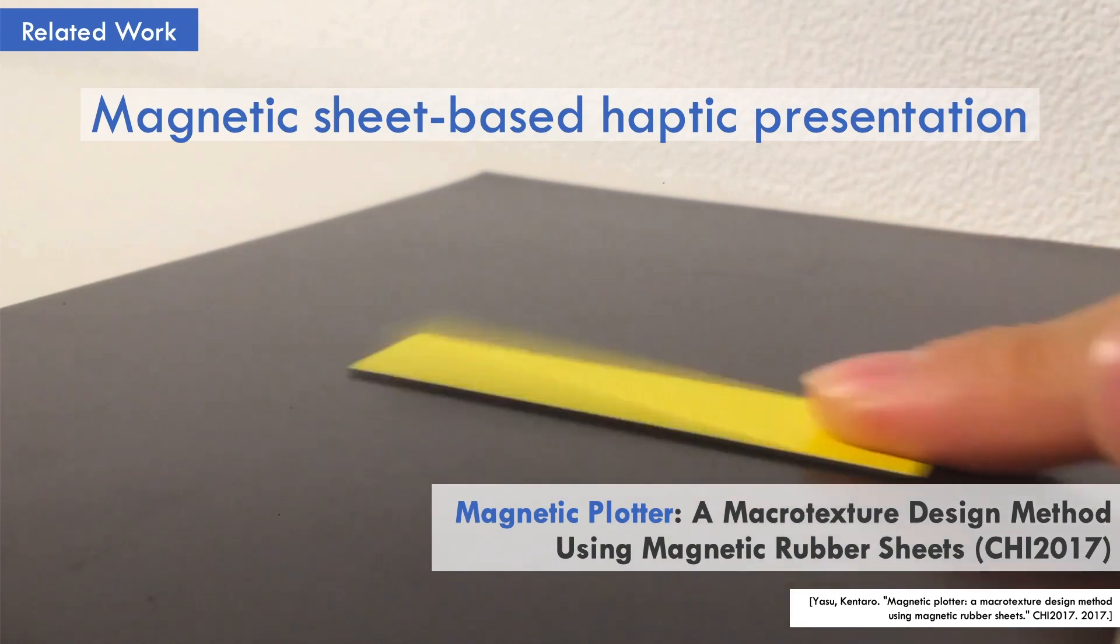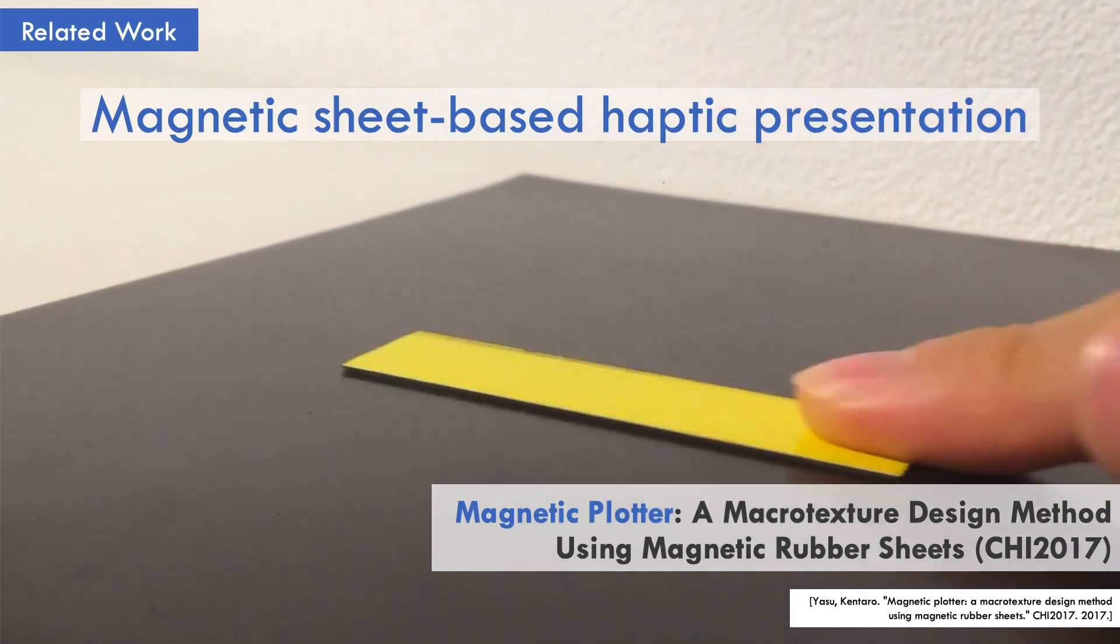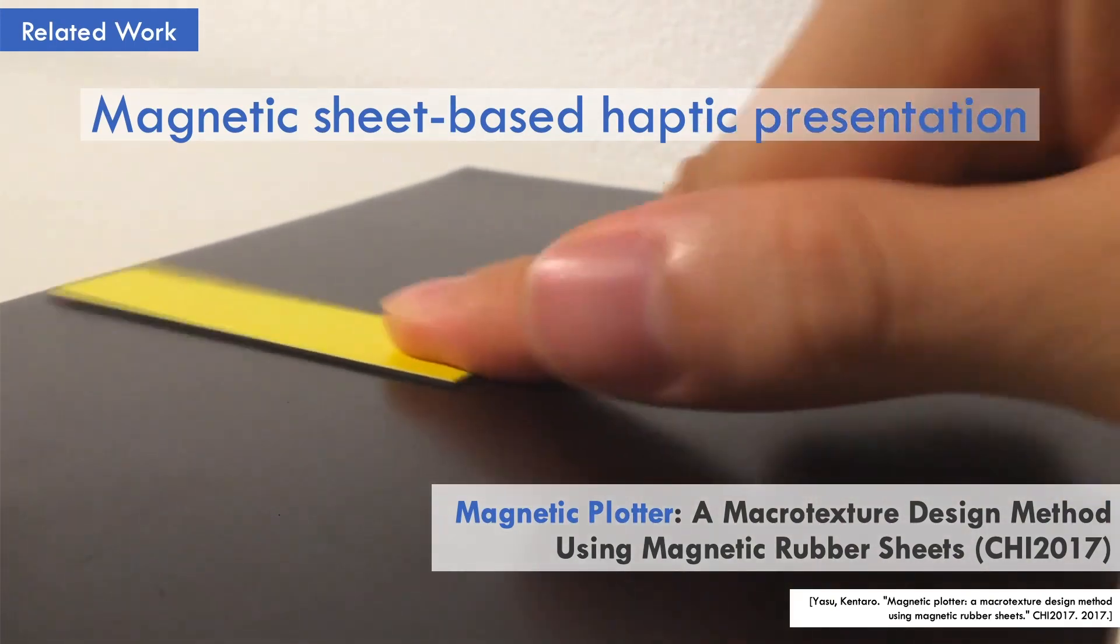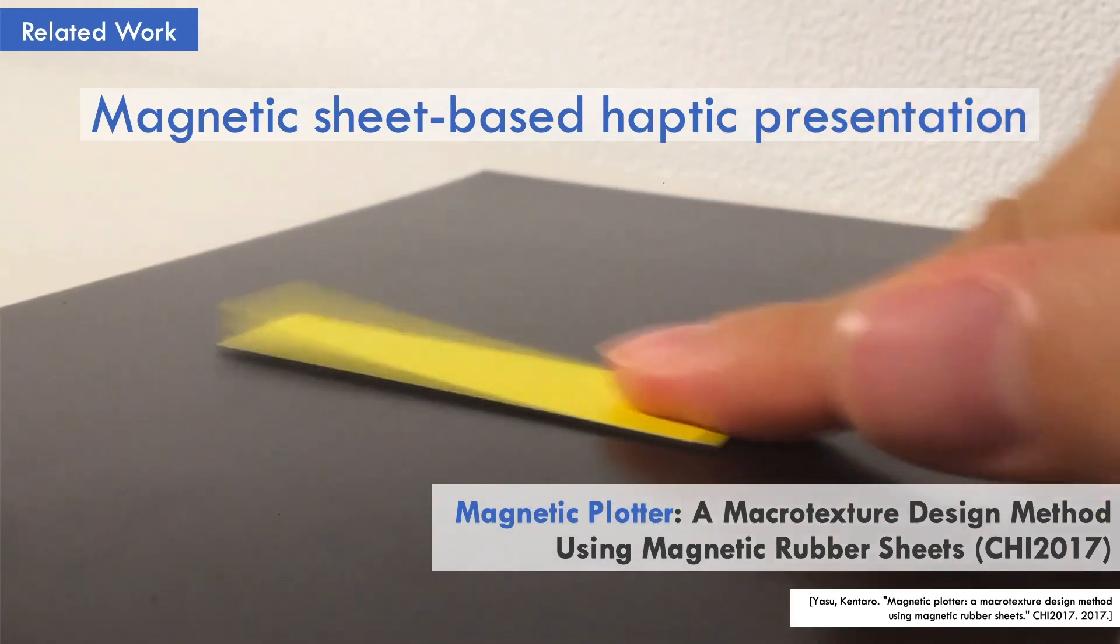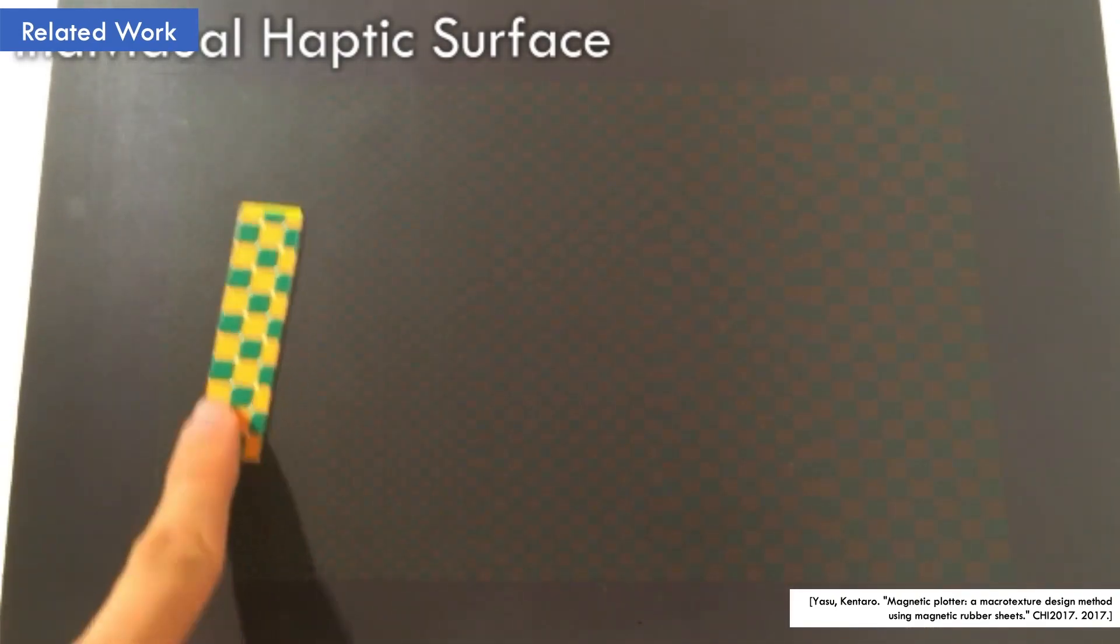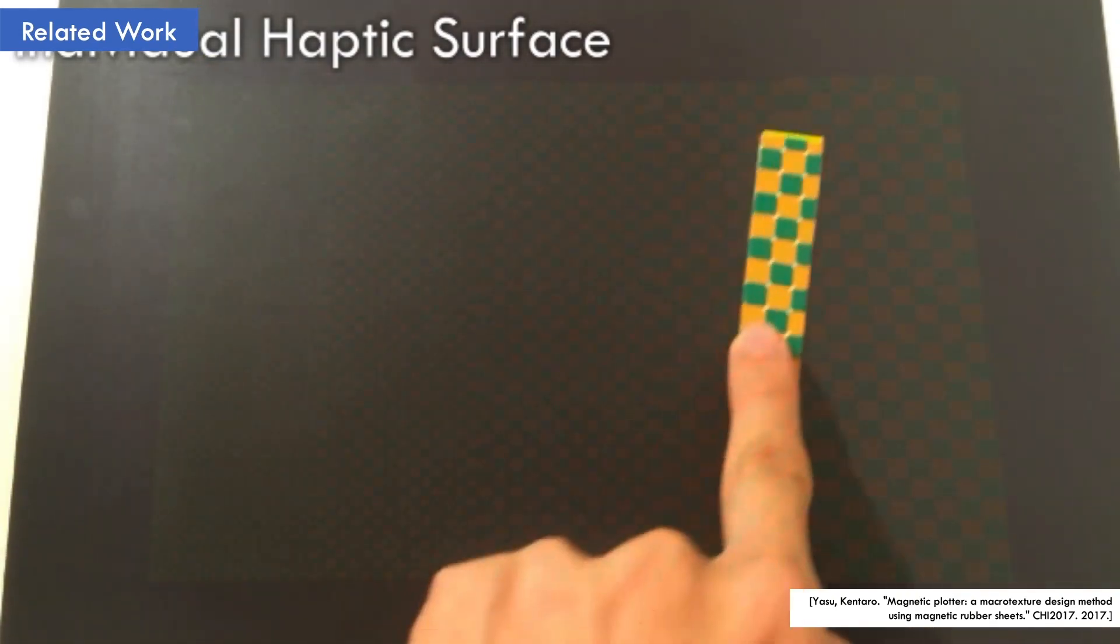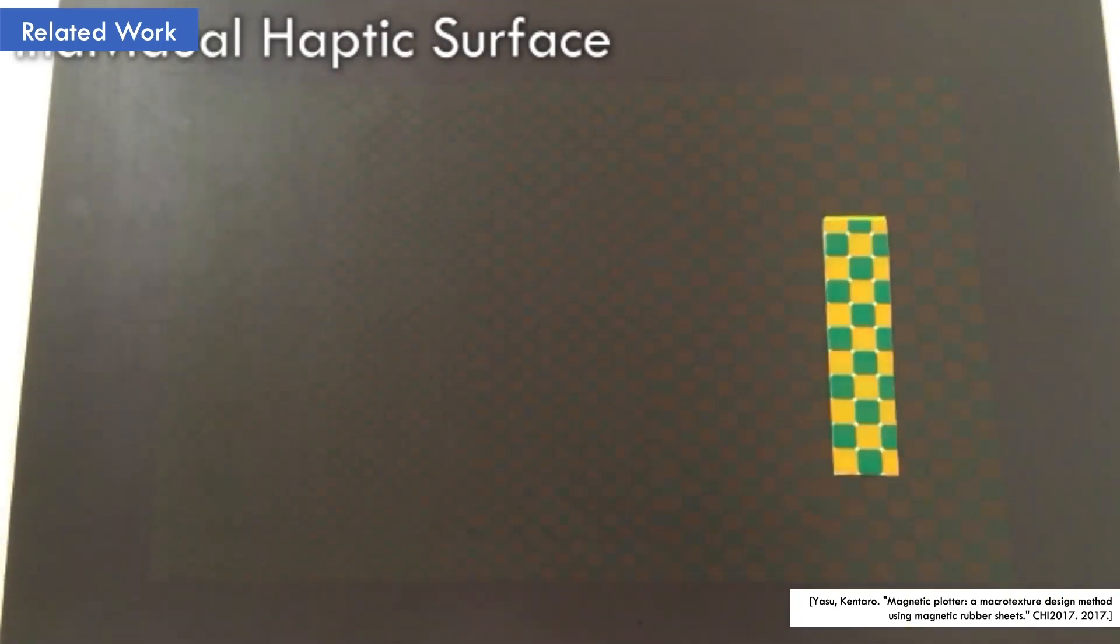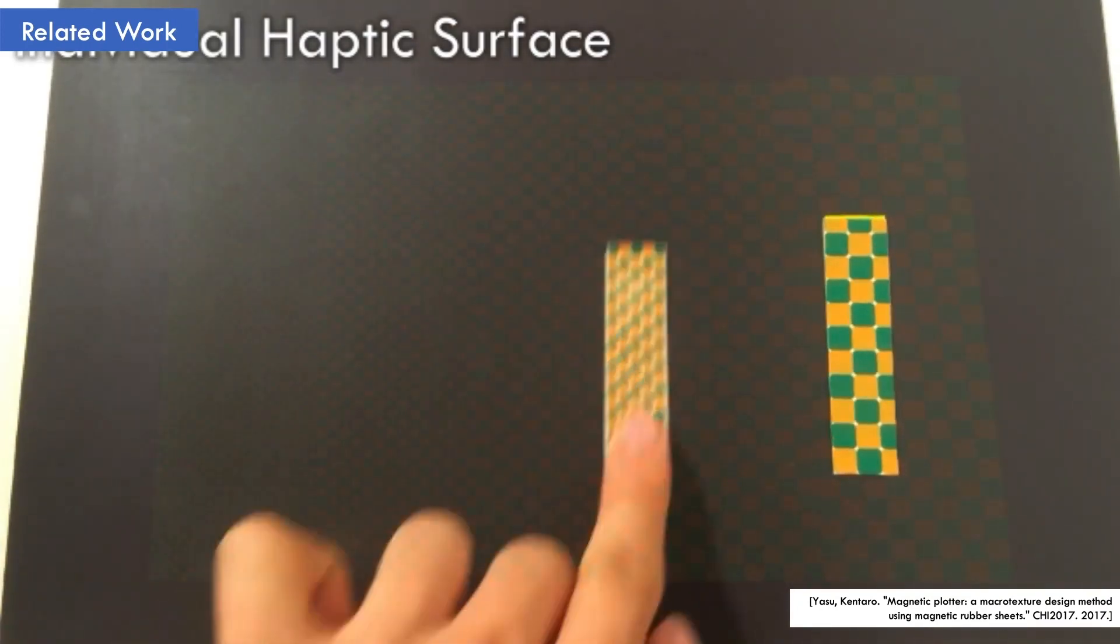Among them, a previous research named Magnetic Plotter has enabled the prototyping of haptic interactions using inexpensive materials. Using the technique, just a pair of magnetic rubber sheets with specific magnetic patterns can provide unique haptic textures when they are rubbed together. And the haptic textures can be designed by the magnetic patterns.